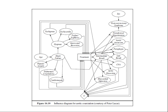Here you can see the influence diagram for aortic coarctation, showing the system, treatment, heart failure, and intermediate results. That's all for this session. Thank you.